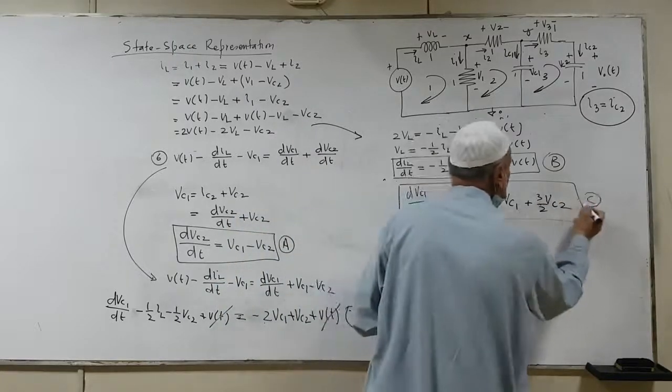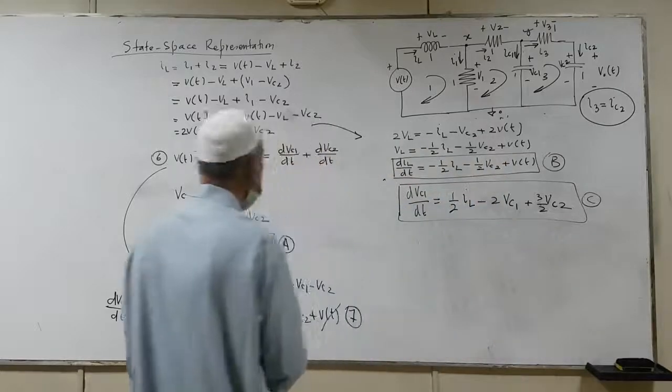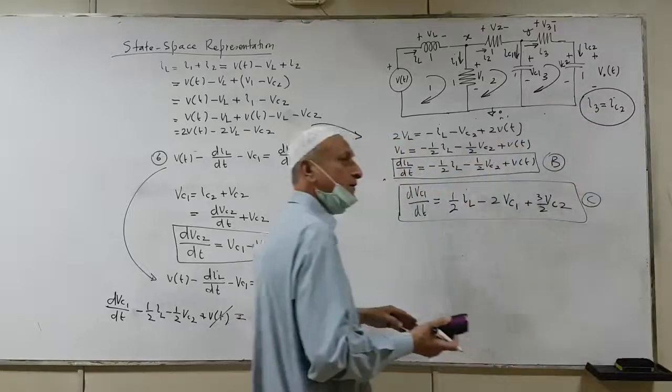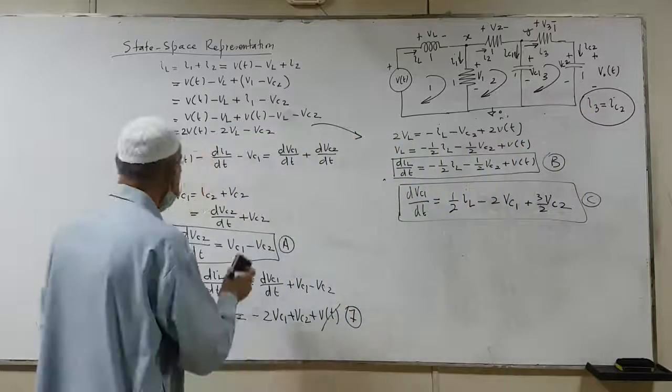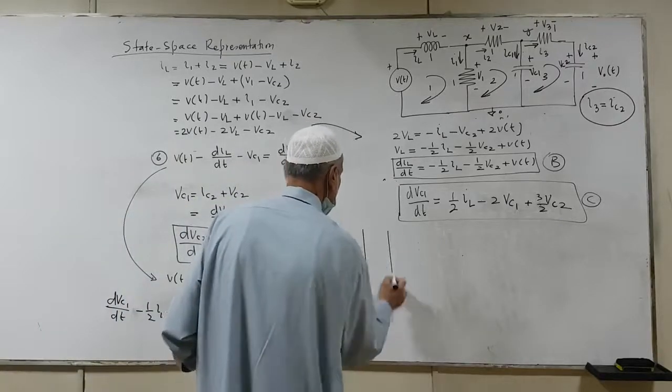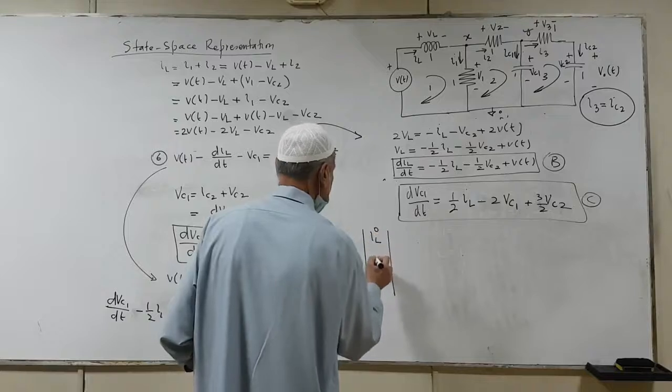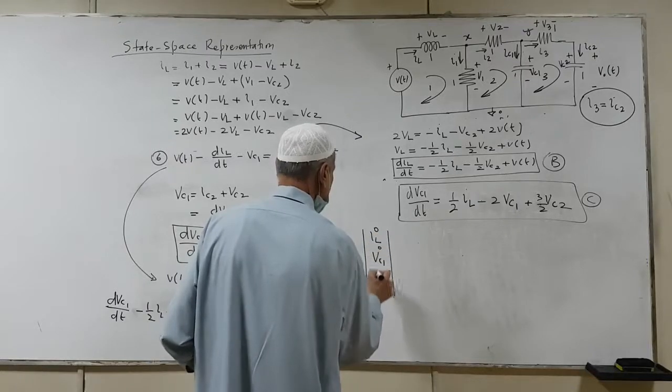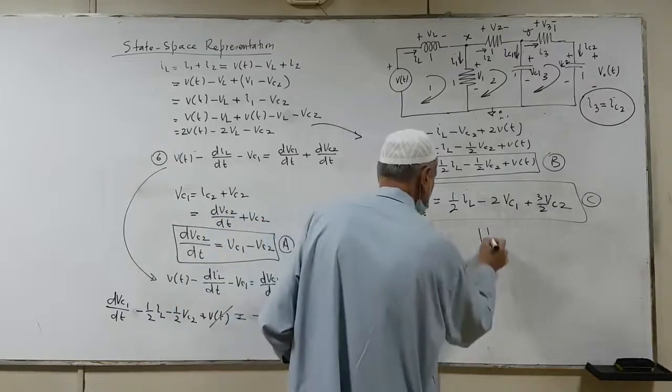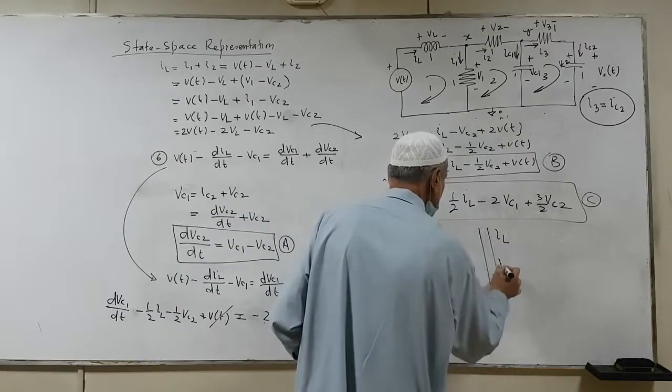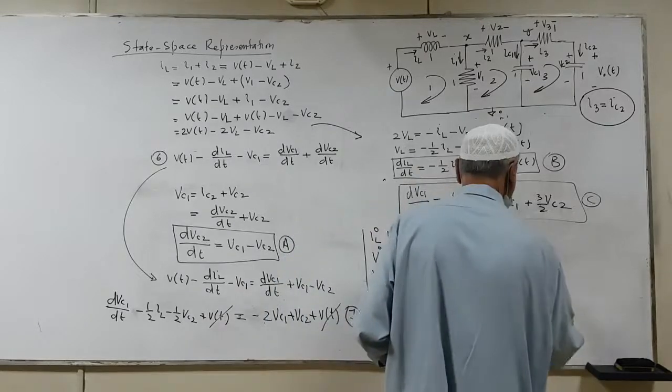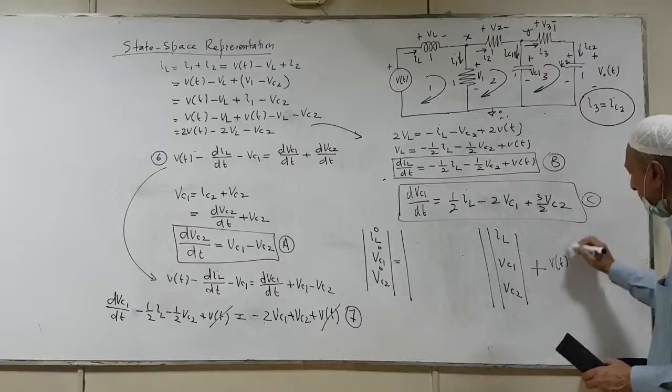All I need are the three equations. Why? Because there are three energy storage devices, there are three state derivatives, and therefore, there are three state variables. Now, I put those in the matrix form. This is, I just put it like this. IL derivative, Vc1 derivative, and Vc2 derivative is equal. On this side, we will have IL, Vc1, Vc2, plus, over here, we will have Vt because Vt is the driving function.